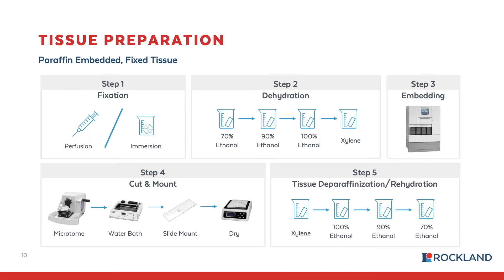The final step in the PE tissue preparation process is deparaffinization and rehydration of the tissue. In this step we need to remove any paraffin that may have penetrated into the tissue and rehydrate the tissue to prevent poor staining. This is done by going in the reverse order of when the tissue was dehydrated — from xylene solvent to decreasing percentages of alcohol to buffers. This is a very broad overview of a very laborious method, but it's a nice summary of the paraffin embedded tissue preparation.